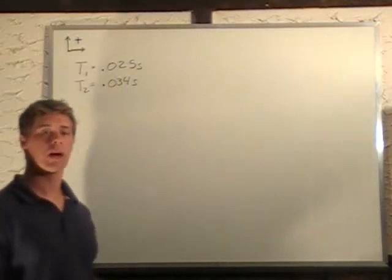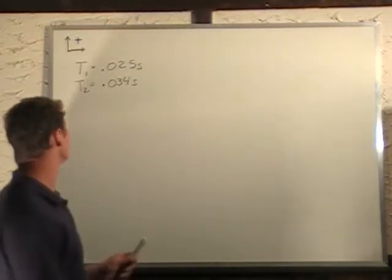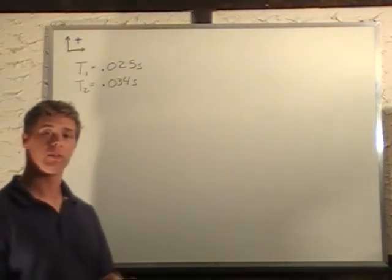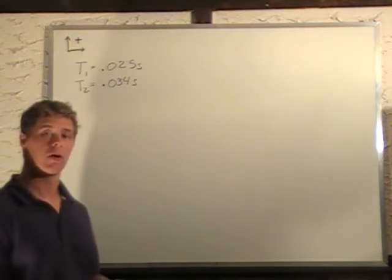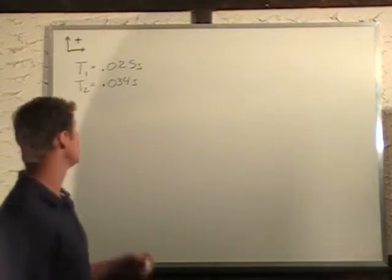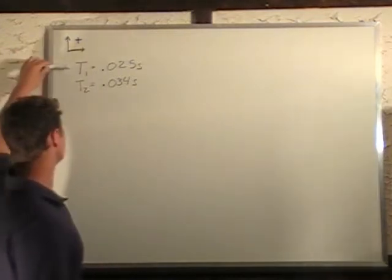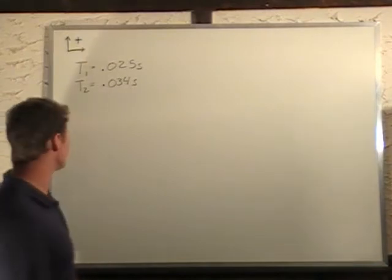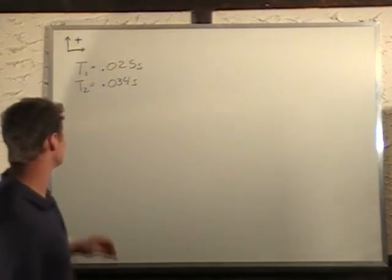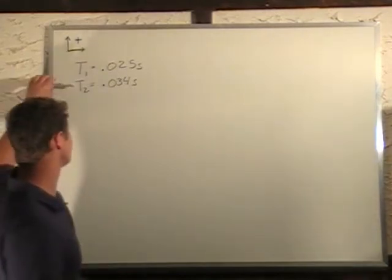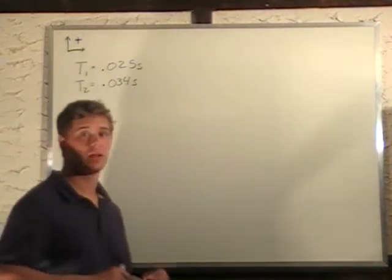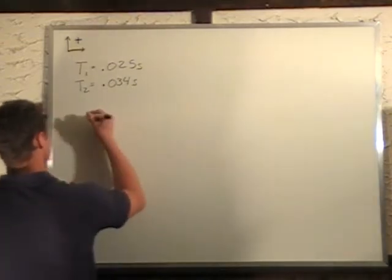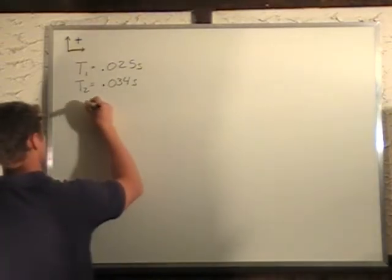In this problem, we're asked to find the beat frequency when two piano keys are played together. One piano key has a period of 0.025 seconds, and the other produces a frequency with a period of 0.034 seconds. The beat frequency is what we're looking for.